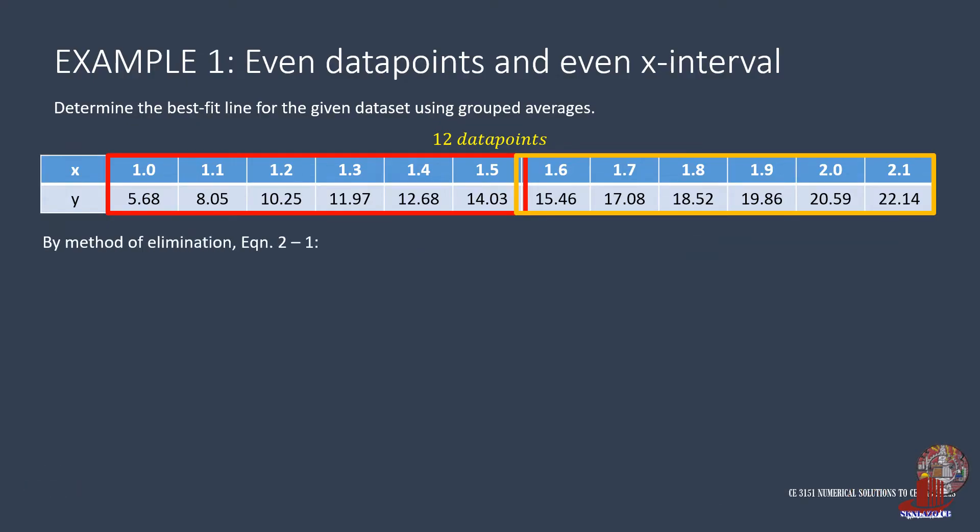By method of elimination, we solve the variables by subtracting equation 2 from equation 1, which cancels out b. Now 2273 over 120 minus 3133 over 300 is equal to 5099 over 600. On the other side, 1.85 minus 1.5 gives 0.35 of a. We then take a as 5099 over 210, which is 24.2810.